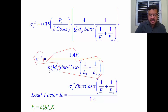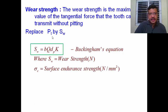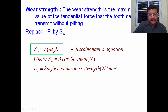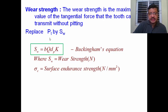With k defined as the load factor, the remaining factors are b, q, and dp. Therefore Pt = b·q·dp·k. In place of Pt we write Sw, the wear strength, because Sw is the maximum tangential force the tooth can transmit without pitting. Thus Buckingham's equation for wear strength is: Sw = b·q·dp·k.